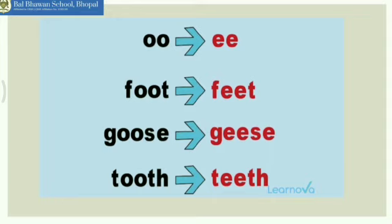Here are some other examples where we change double-O to double-E. Foot — F-double-O-T — becomes feet — F-double-E-T. Goose becomes geese. Tooth becomes teeth. We change double-O to double-E to make the plural noun.